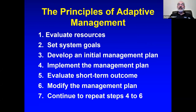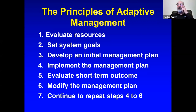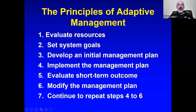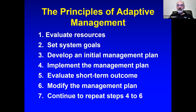The principles of adaptive management are a reiterative process. You evaluate your resources and come up with a goal for your farm. You develop your initial plan and implement it. Then the key part: evaluate the short-term outcomes. Did they graze it too short? Not short enough? Think it through and evaluate yourself, then modify that plan. Maybe it didn't rain, maybe it rained too much — but modify. Then just keep repeating that cycle. This creates rapid learning.